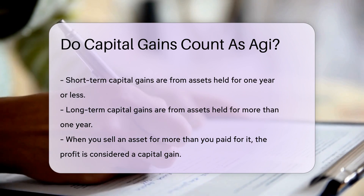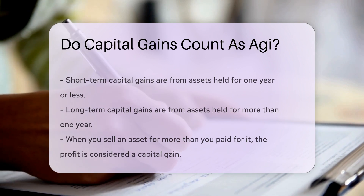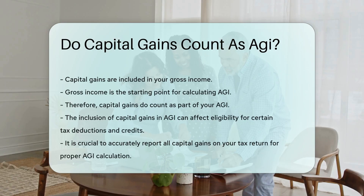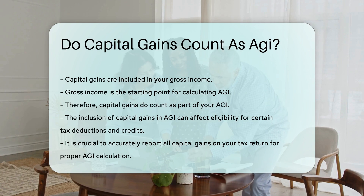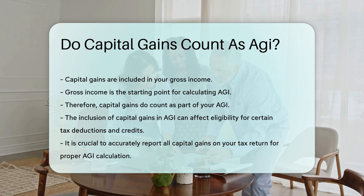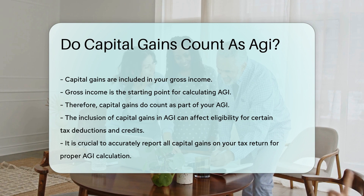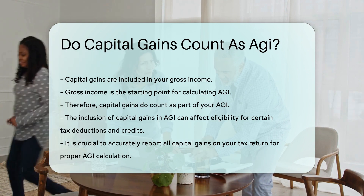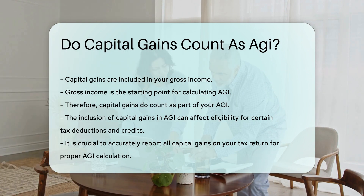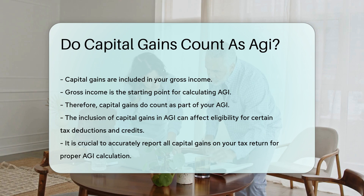Therefore, capital gains do indeed count as part of your AGI. The inclusion of capital gains in AGI can affect your eligibility for certain tax deductions and credits. It is crucial to accurately report all capital gains on your tax return to ensure proper calculation of your AGI.